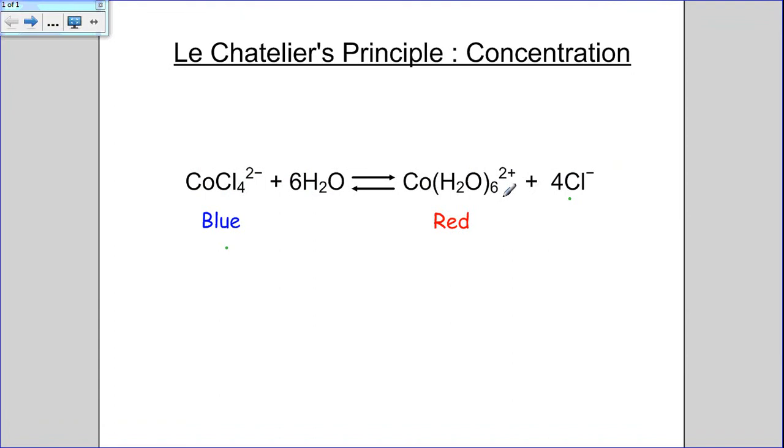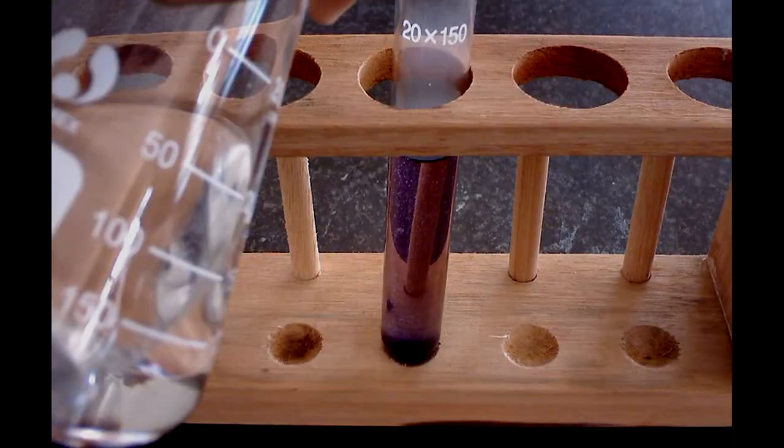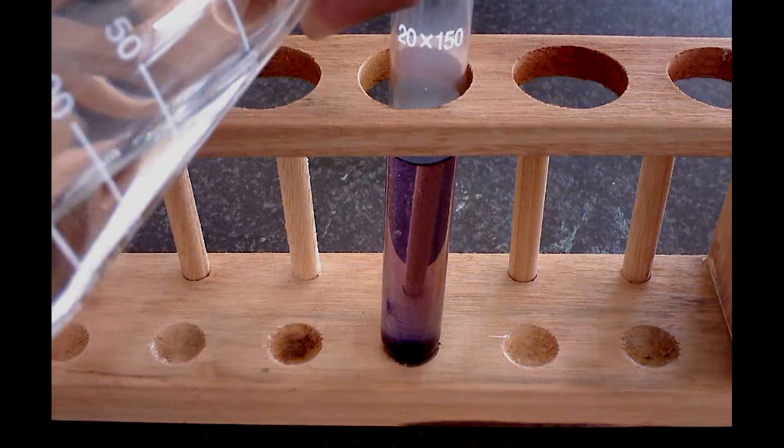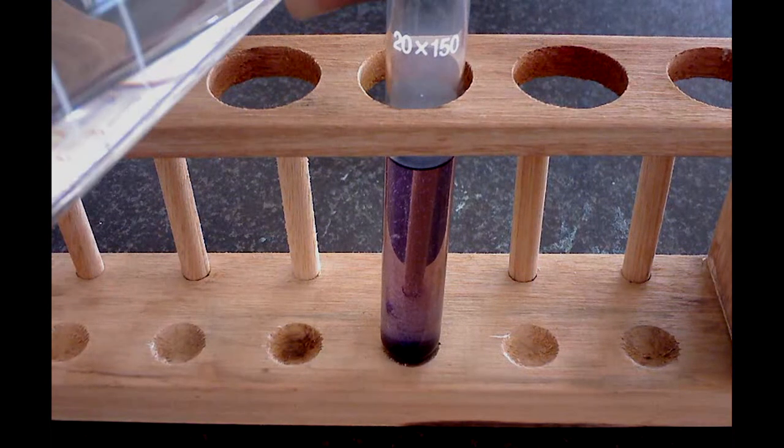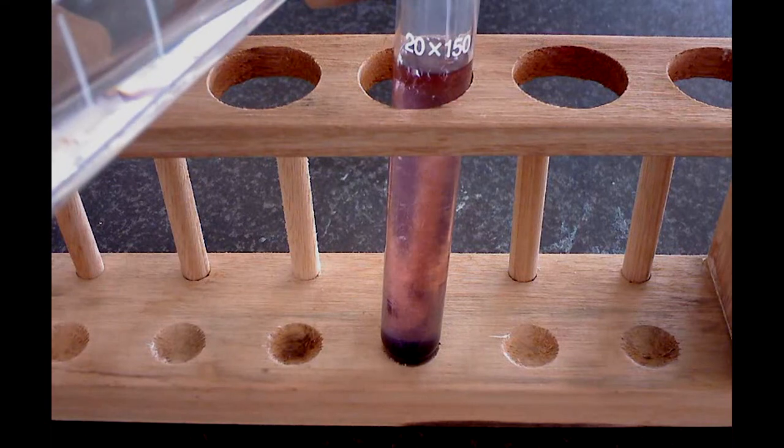And the result for us is that when water is added to a blue CoCl4 2- ion solution, the blue solution will turn red, which shows that the forward reaction is favored.